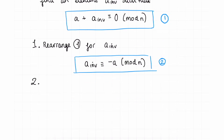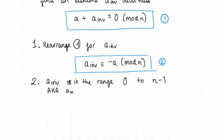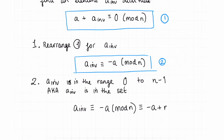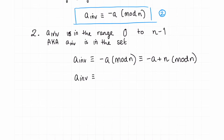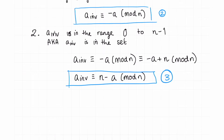Step two: we need to make sure a_inv lies in the range zero to n minus one, because we need a_inv to be in the set. If a is in the set, minus a is not in the set. Due to the way congruence works, we can add n to make it wrap around and find the element actually in the set. So minus a plus n is still congruent mod n. Therefore a_inv is congruent to n minus a mod n — equation three. This is how we find the additive inverse of an element a.